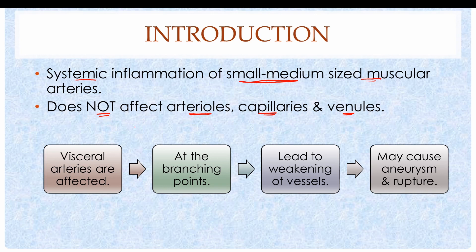The most commonly involved arteries in descending order are renal arteries, followed by cardiac, hepatic, and splanchnic arteries. The disease typically spares the arterioles, capillaries, and venules, and most importantly it does not affect pulmonary vessels.